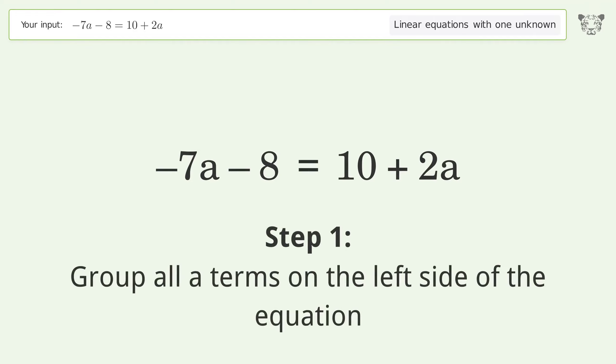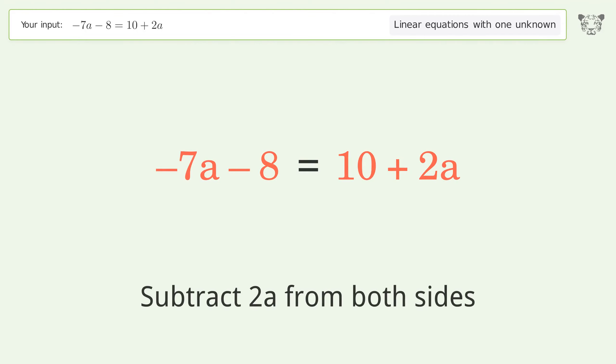Group all a terms on the left side of the equation. Subtract 2a from both sides.